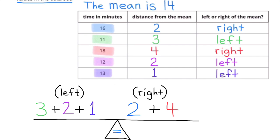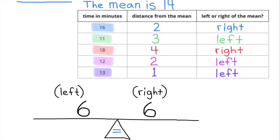On the right-hand side, 16 is 2 to the right of 14, so I'm going to write 2. And 18 is 4 to the right of 14, so I'm going to write 4. 3 plus 2 plus 1 is 6, and 2 plus 4 is 6. The sum of the distances from 14 on the left-hand side is 6, and the sum of the distances from 14 on the right-hand side is 6. This shows that the balance point is 14.